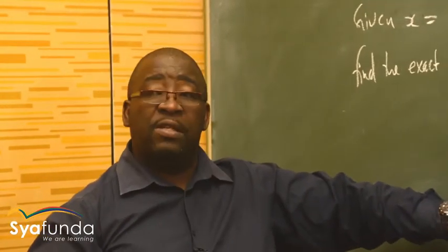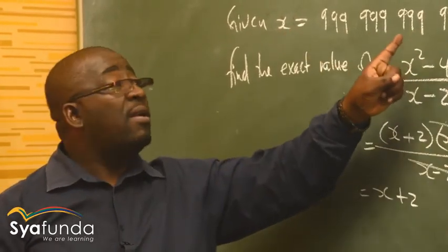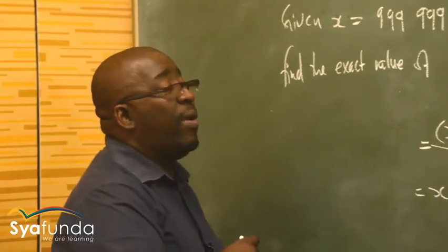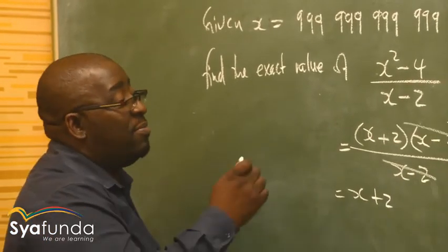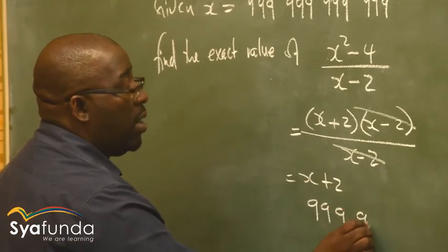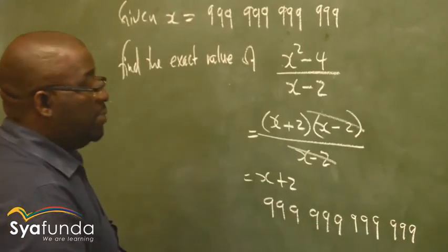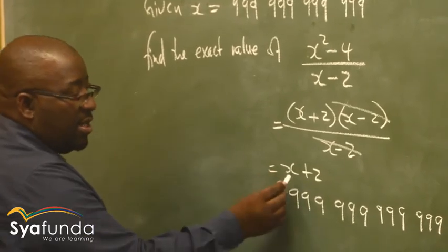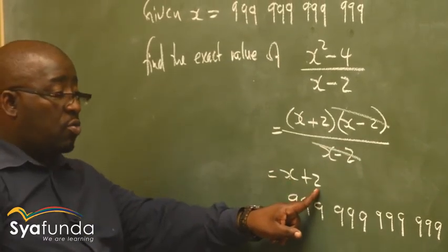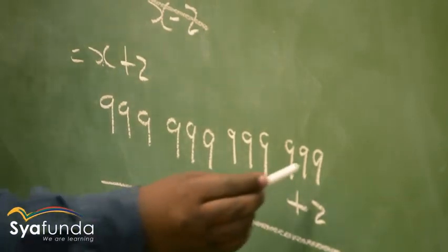I am required to find the exact value. I know the value of X — I'm given X = 1.231231231... Instead of X, I replace it with that whole repeating decimal value. Then I add plus 2. Let's go back to grade 4, grade 5 arithmetic — I add 2 to that repeating decimal.